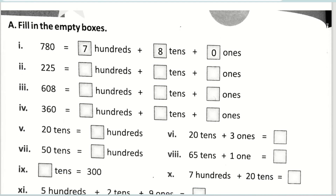Next, fill in the empty boxes. The first one is already done for you; we'll go for the next one. How many hundreds are there? Two hundreds. How many tens are there? Two tens. And how many ones are there? Five ones.